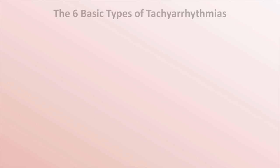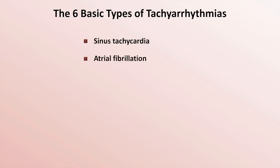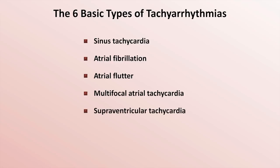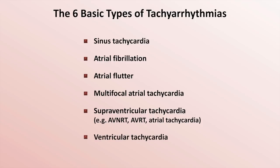To very briefly review from the last video, here are the six basic types of tachyarrhythmias: sinus tachycardia, atrial fibrillation, atrial flutter, multifocal atrial tachycardia, supraventricular tachycardia — which we are considering at this point as one entity, even though it actually includes numerous more specific diagnoses, most notable of which are AVNRT, AVRT, and atrial tachycardia — and finally, ventricular tachycardia, which can be subdivided into monomorphic and polymorphic subtypes. The six questions will allow you to place any tachyarrhythmia into one of these types with 99% certainty.